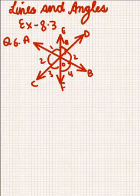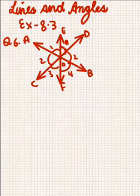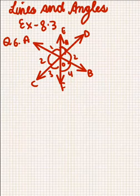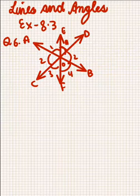Welcome everyone. We are on RD Sharma Class 9, Lines and Angles, Chapter Exercise 8.3, Question 6, which says that if two straight lines intersect each other, prove that the ray opposite to the bisector of one of the angles thus formed bisects the vertically opposite angles. In this figure, AB and CD intersect at point O, and EF bisects AB and CD.